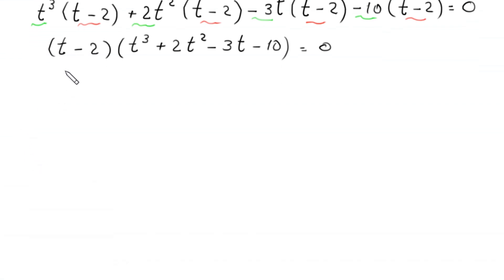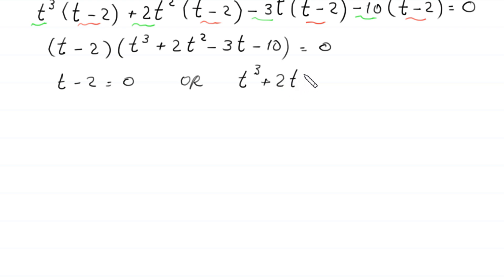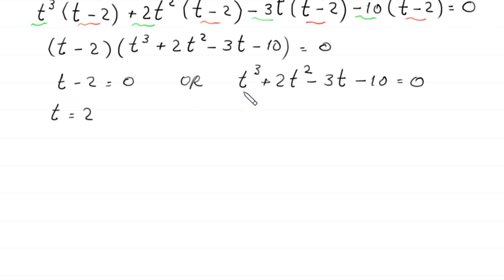From here, either t minus 2 equals 0, giving t equals 2, or the cubic expression t cubed plus 2t squared minus 3t minus 10 equals 0. Factors of 10 are plus or minus 1, plus or minus 2, plus or minus 5, and plus or minus 10.